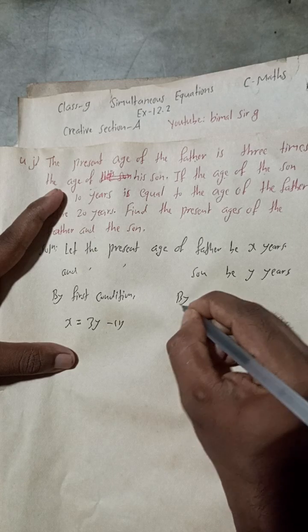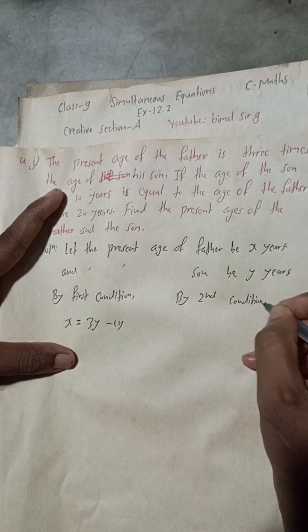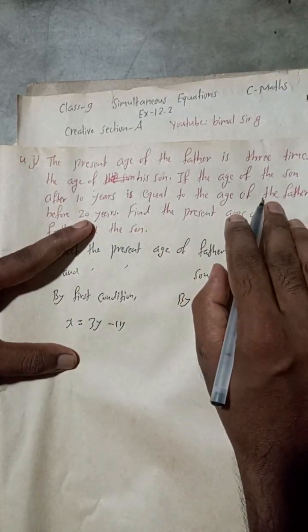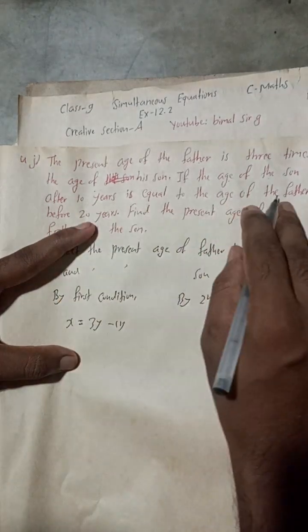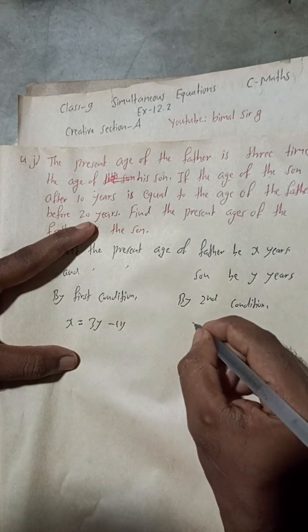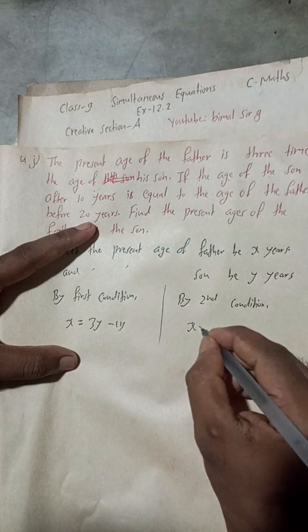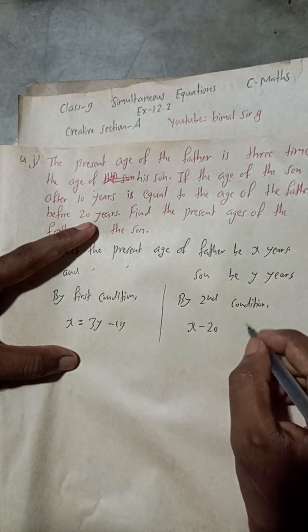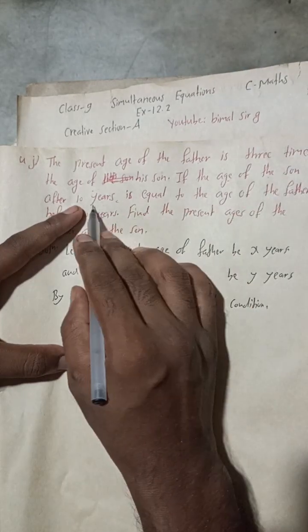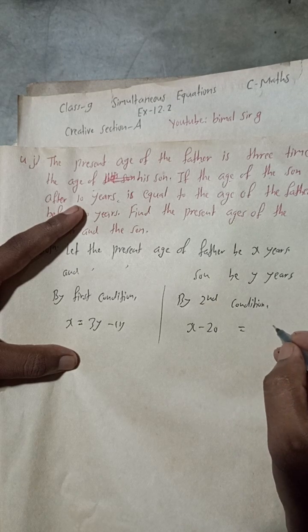Now by the second condition: if the age of the son after 10 years is equal to the age of the father before 20 years. The present age of the father is x, so the father's age before 20 years is x minus 20. The son's age after 10 years: